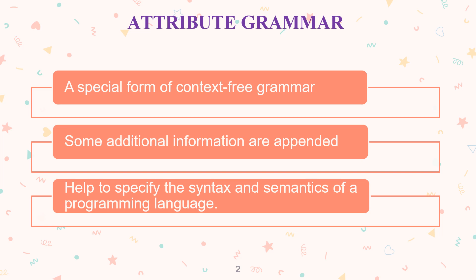Attribute Grammar is a special form of context-free grammar. Some additional attribute information is added to one or more of its non-terminals in order to provide context-sensitive grammar, which helps to specify the syntax and semantics of the programming language.